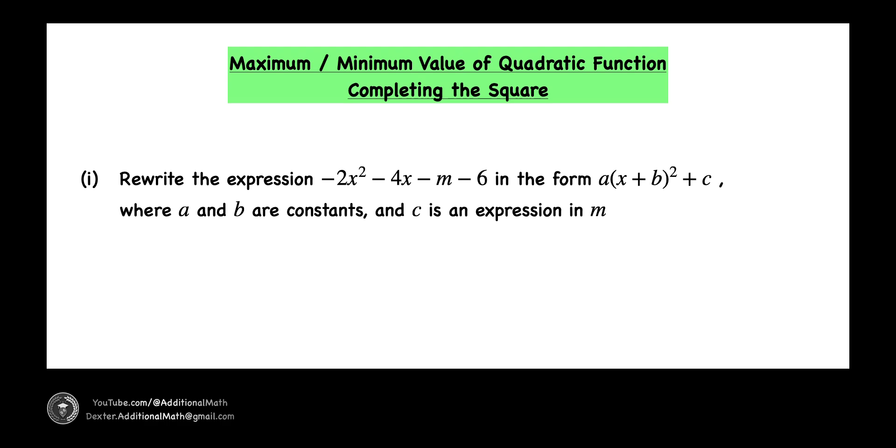In part 1, write the expression negative 2x squared minus 4x minus m minus 6 in the form a times the square of x plus b plus c, where a and b are constants and c is an expression in m.